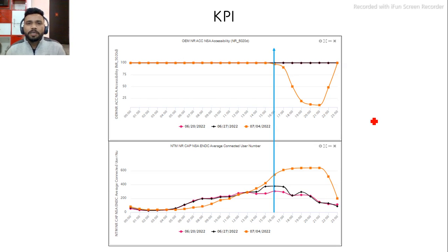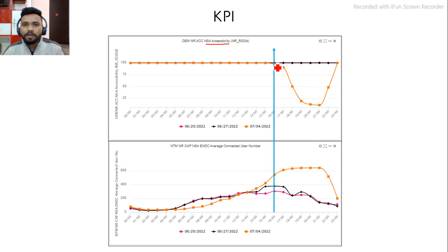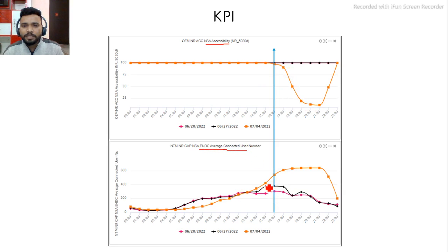This is my KPI, and you can see the NSA Accessibility KPI is degrading. At the same time, the ENDC average connected users are increasing.